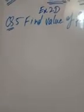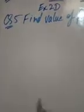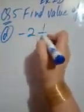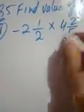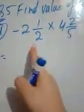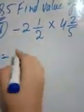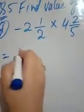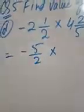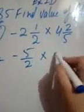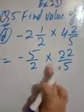Let's proceed to question number 5 — the remaining parts of question 1 you can solve by the same method. In question 5, we take the part: minus 2 and 1/2 multiplied by 4 and 2/5. Again, change these mixed numbers into improper fractions. It becomes minus 5/2 multiplied by 22/5.